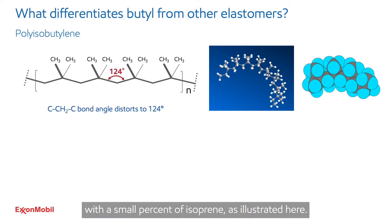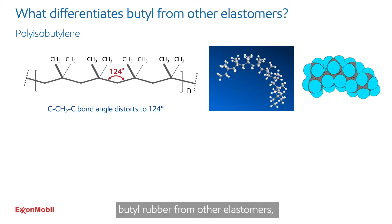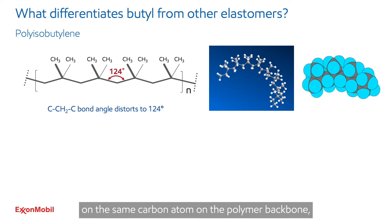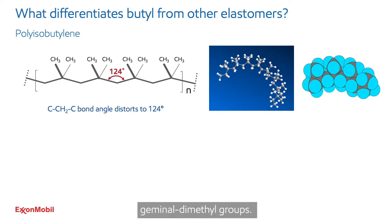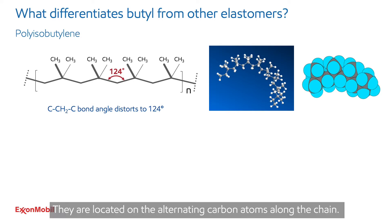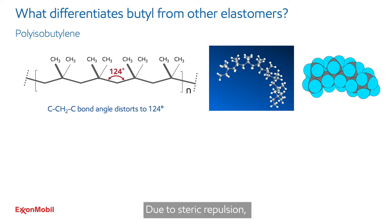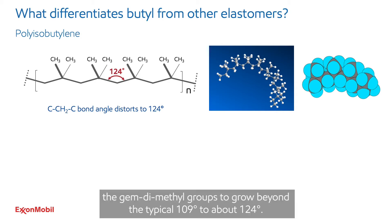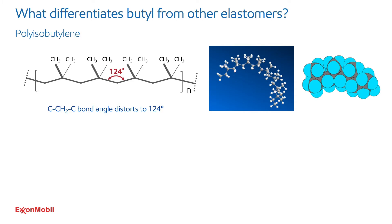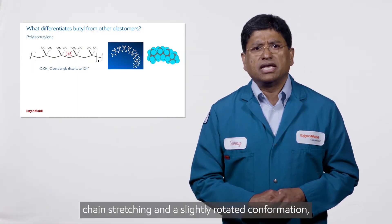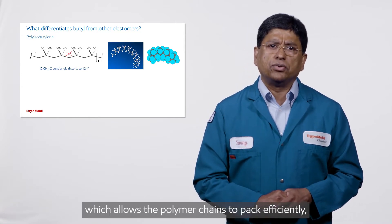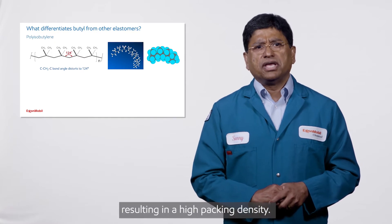Butyl Rubber is a co-polymer of isobutylene with a small percent of isoprene. The key structural feature that differentiates Butyl Rubber from other Elastomers is the presence of two methyl groups on the same carbon atom on the polymer backbone. These are called geminal dimethyl groups. They are located on the alternating carbon atoms along the chain. Due to steric repulsion, these methyl groups push apart, forcing the bond angle on the carbon atom to grow beyond the typical 109 degrees to about 124 degrees. This results in chain stretching and a slightly rotated conformation, which allows the polymer chain to pack efficiently, resulting in a high packing density.